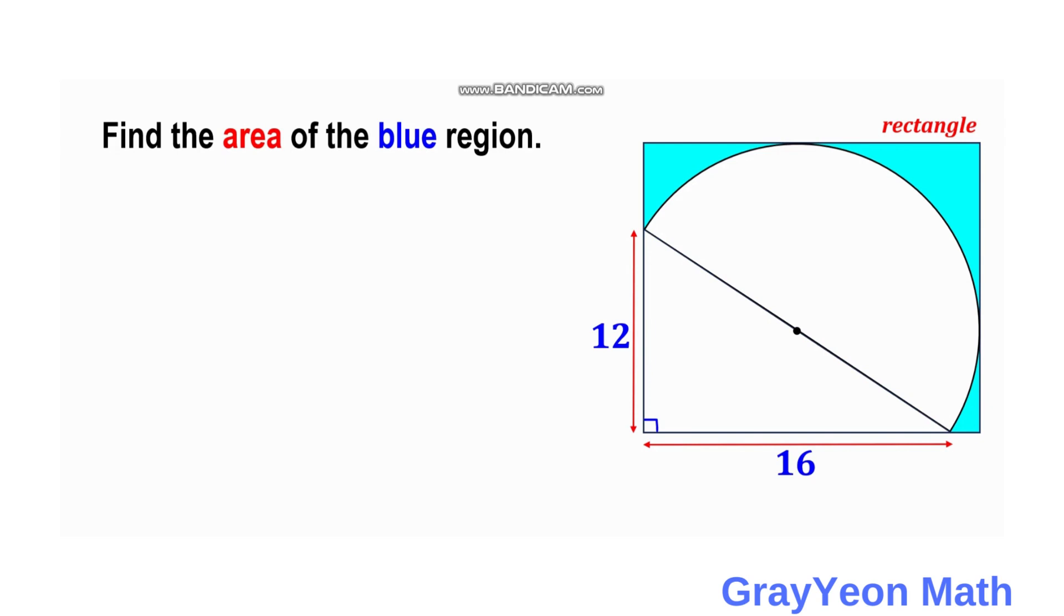First thing we need to do is get this hypotenuse of this right triangle, which is also the diameter of the semicircle.